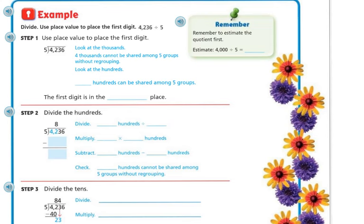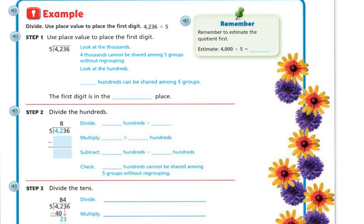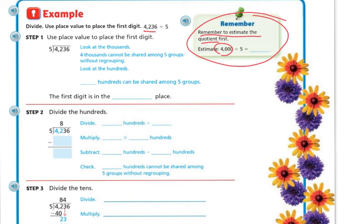Let's do another example. Divide — use place value to place the first digit of 4,236 divided by 5. Step 1: use place value to place the first digit. Remember to estimate first. 4,236 is close to 4,000. And 4,000 divided by 5 is about 800, because 5 times 8 is 40 and we add two more zeros.